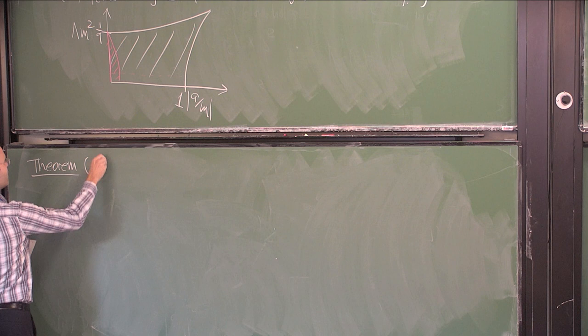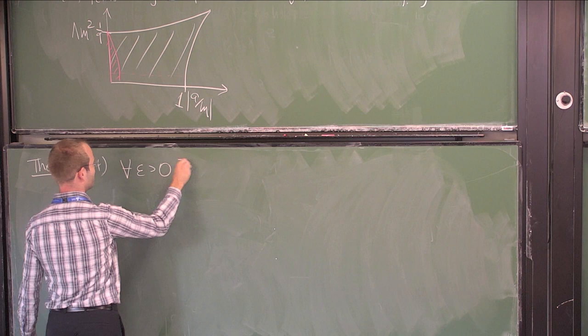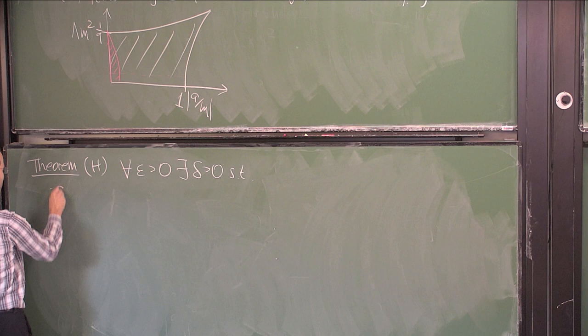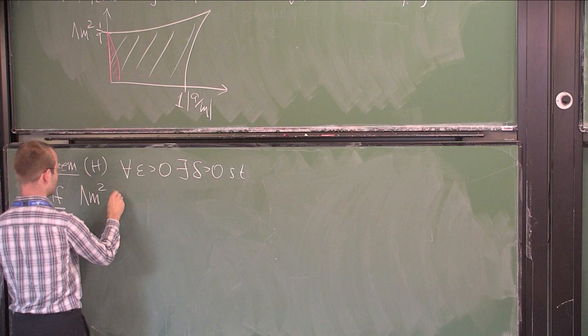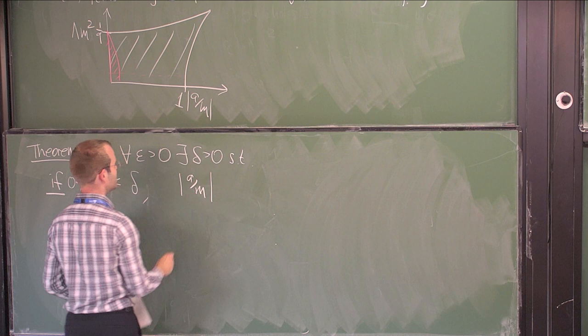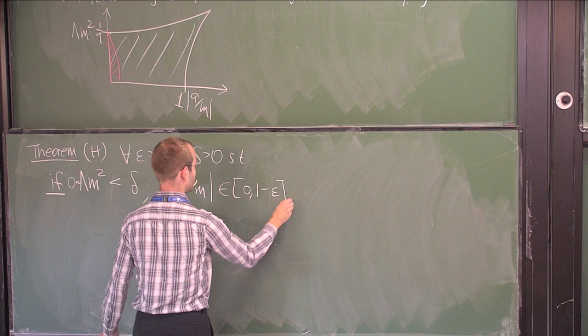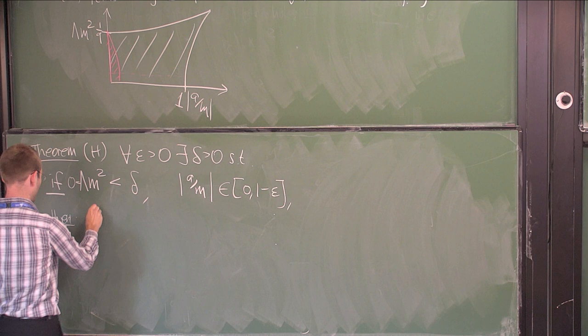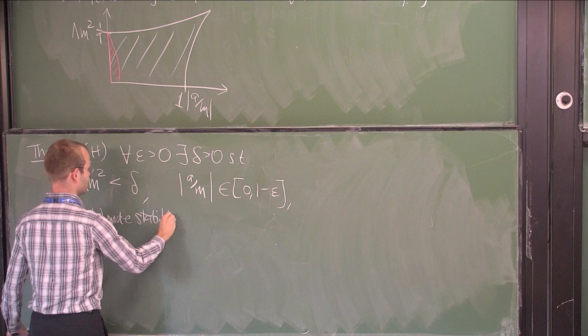The theorem is the following. For every ε > 0, there exists δ > 0 such that: if the parameters satisfy 0 < λM² < δ, and the specific angular momentum A/M lies in the interval (0, 1 − ε), then first of all, mode stability holds for the scalar wave equation on those Kerr-de Sitter spacetimes.